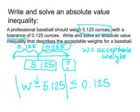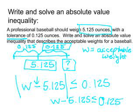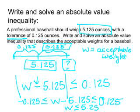Since this is less than or equal to, we have an 'and' statement. Rewriting: w minus 5.125 is greater than or equal to negative 0.125 and w minus 5.125 is less than or equal to 0.125. Adding 5.125 to all parts gives: w is greater than or equal to 5 ounces and w is less than or equal to 5.25 ounces. So a baseball team can play with a ball that weighs anywhere from 5 to 5.25 ounces.